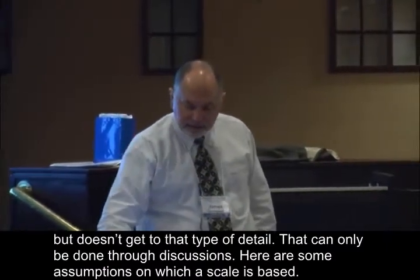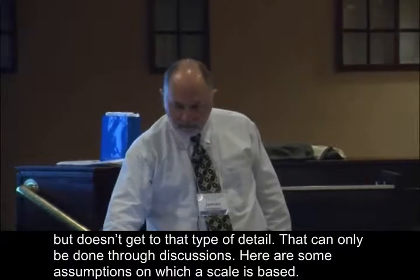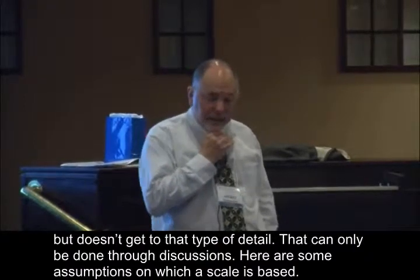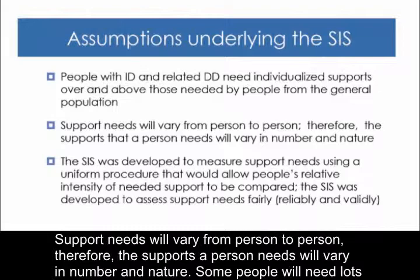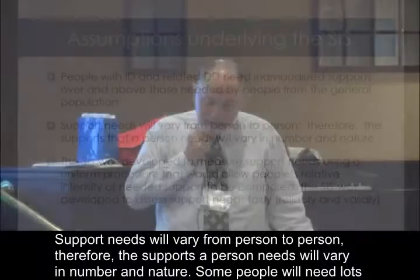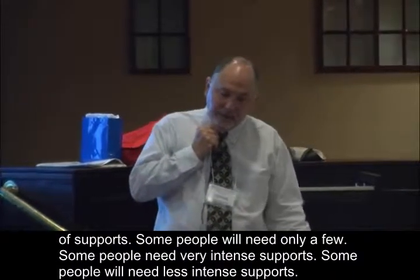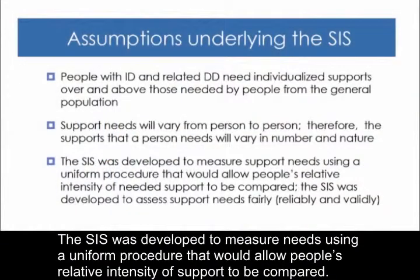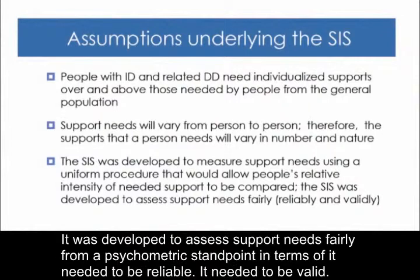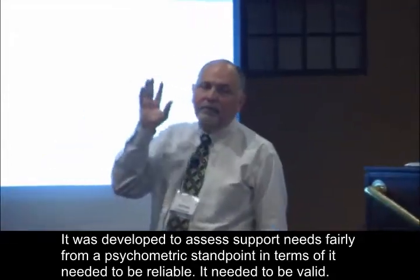That can only be done through discussions. Here are some assumptions on which the scale is based. People with intellectual and related developmental disabilities need supports over and above those needed by people from the general population. Support needs will vary from person to person — so the supports a person needs will vary in number and nature. Some people will need lots of supports; some need only a few. Some people need very intense supports; some will need less intense supports. The system was developed to measure support needs using a uniform procedure that allows people's relative intensity of support to be compared, and it was developed to be reliable and valid from a psychometric standpoint.